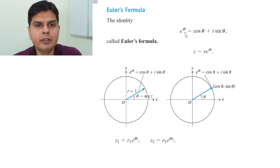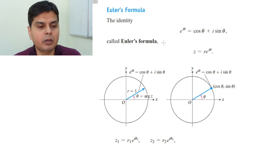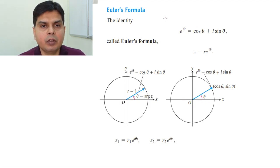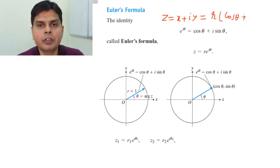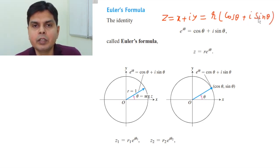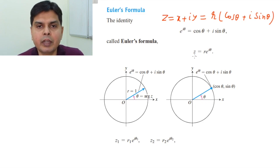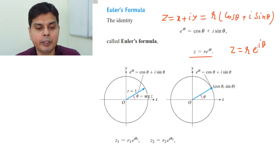Euler's formula states that e to the power iθ is equal to cos θ plus i sin θ. The advantage of this formula is that a complex number z = x + iy can be written in polar form as r times (cos θ + i sin θ), which equals r·e^(iθ). So any complex number can be written compactly as z = r·e^(iθ), and it is very easy to multiply using this exponential form.